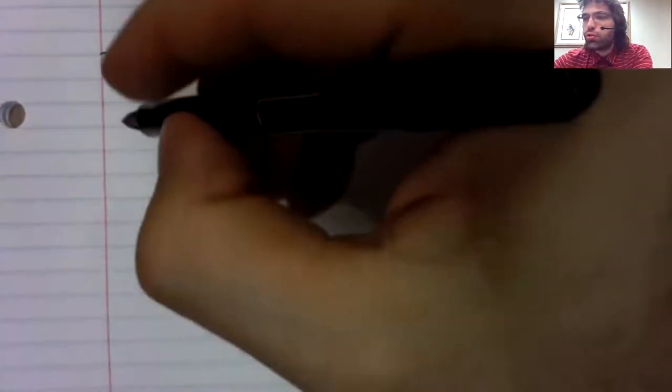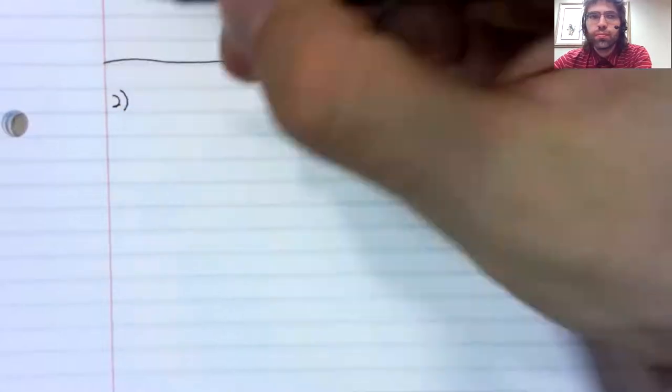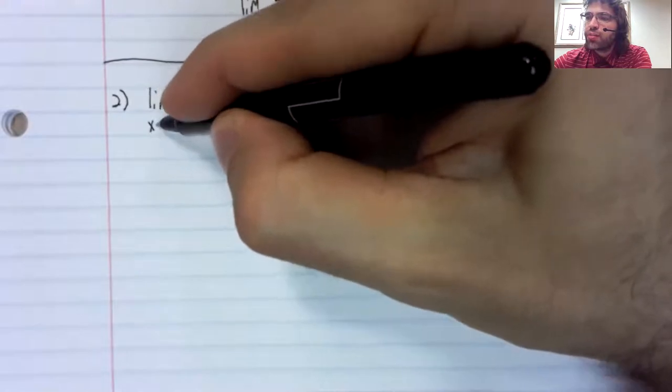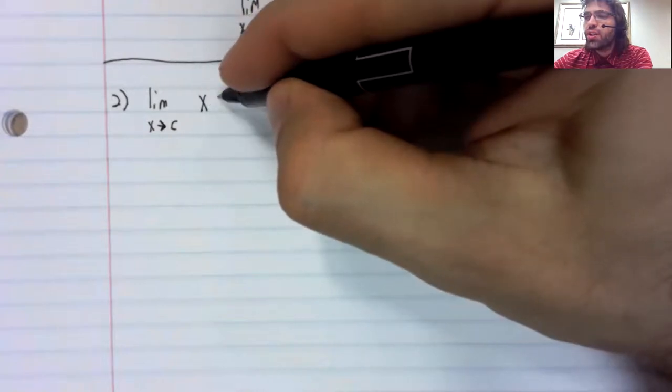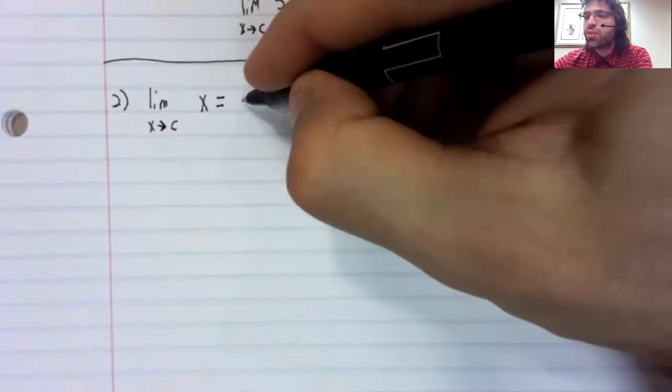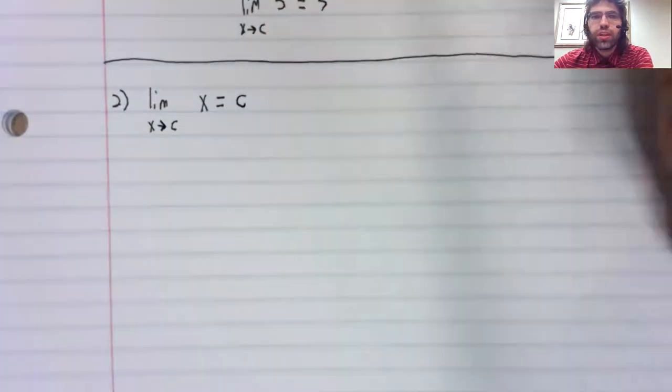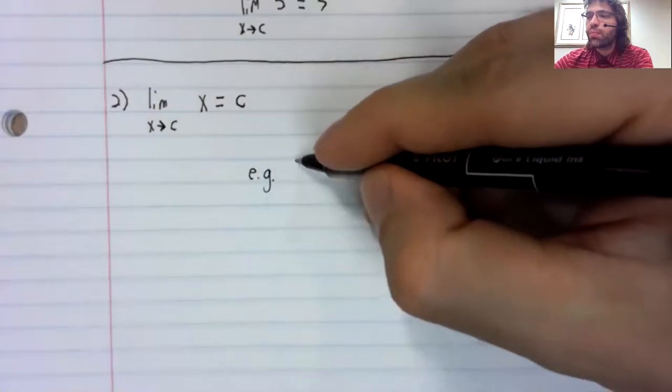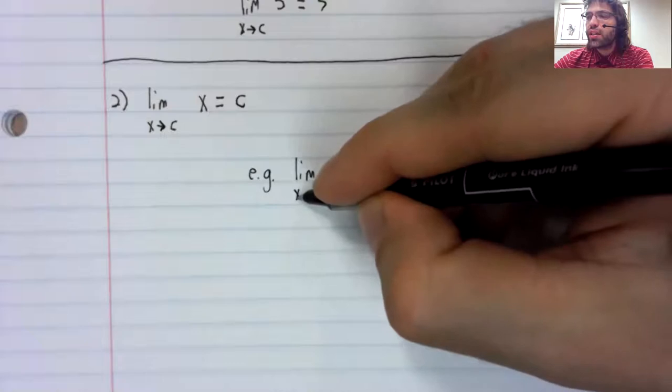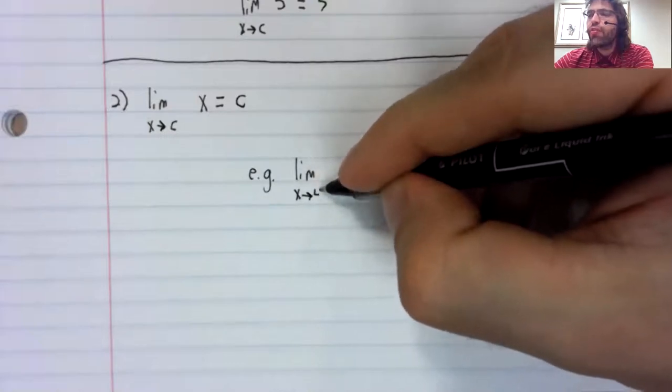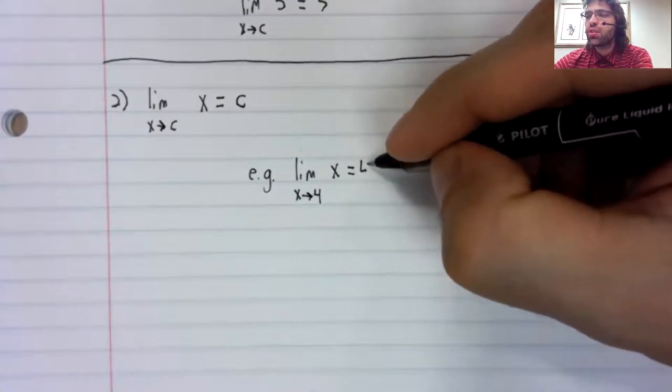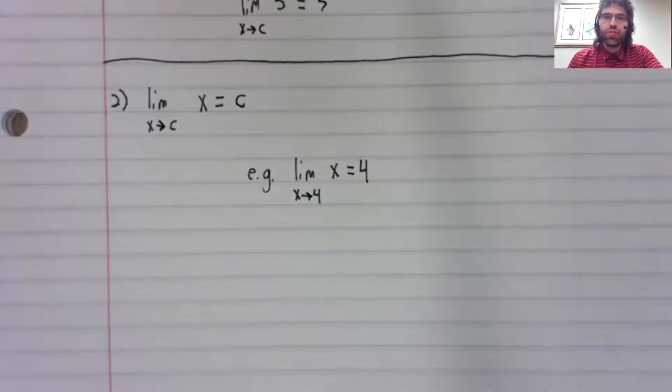Second rule. The limit as x approaches c of the identity function x is c. So for example, the limit as x approaches four of the identity function x equals four.